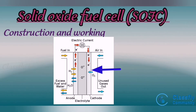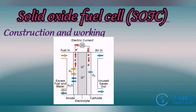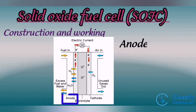The reduction of oxygen into oxygen ions occurs at the cathode. These ions then diffuse through the solid oxide electrolyte to the anode, where they electrochemically oxidize the fuel. In this reaction, water is given off as a byproduct along with two electrons. These electrons flow through an external circuit to do work, and the cycle repeats as those electrons re-enter the cathode.